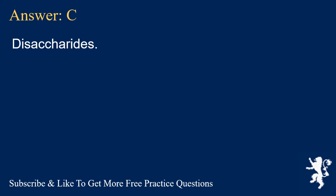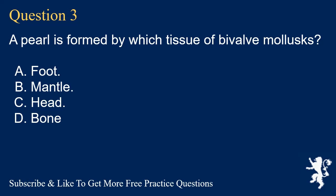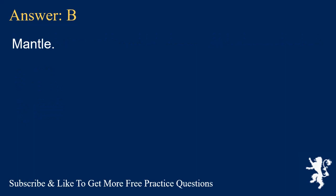Question 3. A pearl is formed by which tissue of bivalve molluscs? A. Foot. B. Mantle. C. Head. D. Bone. Answer: B. Mantle.